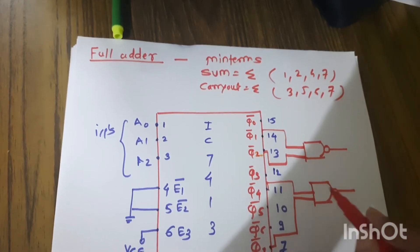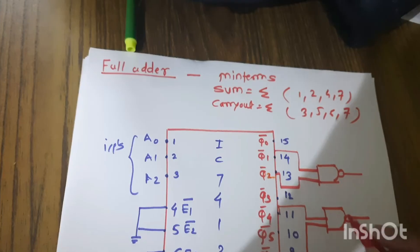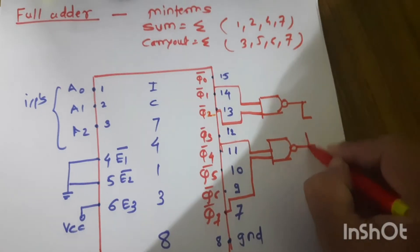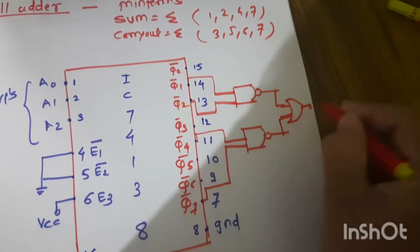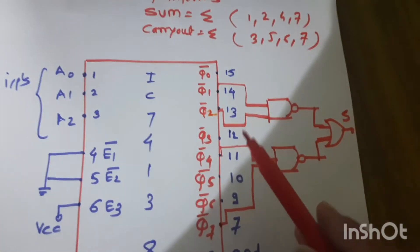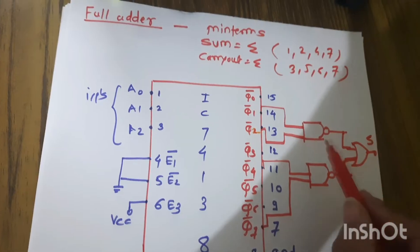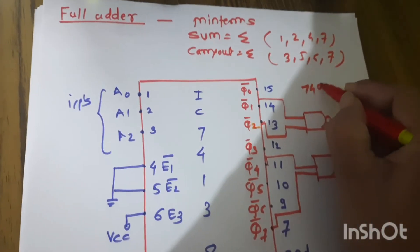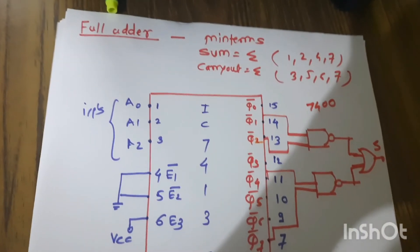The sum is the summation of all these min terms, so we take the outputs of both NAND gates and connect them to an OR gate. The output of the OR gate gives us the sum.